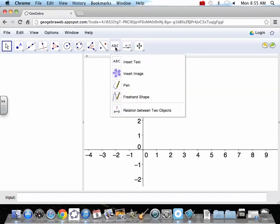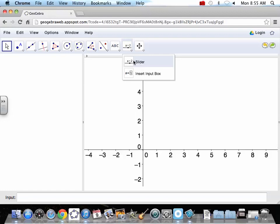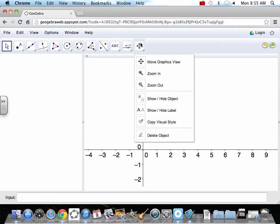There's insert text, insert image. Sliders allow you to use a variable. As in, if you're doing y equals 2x, you could go y equals ax, and a would be a slider. You can see what happens when it gets bigger or smaller. And then the move and zoom tools.